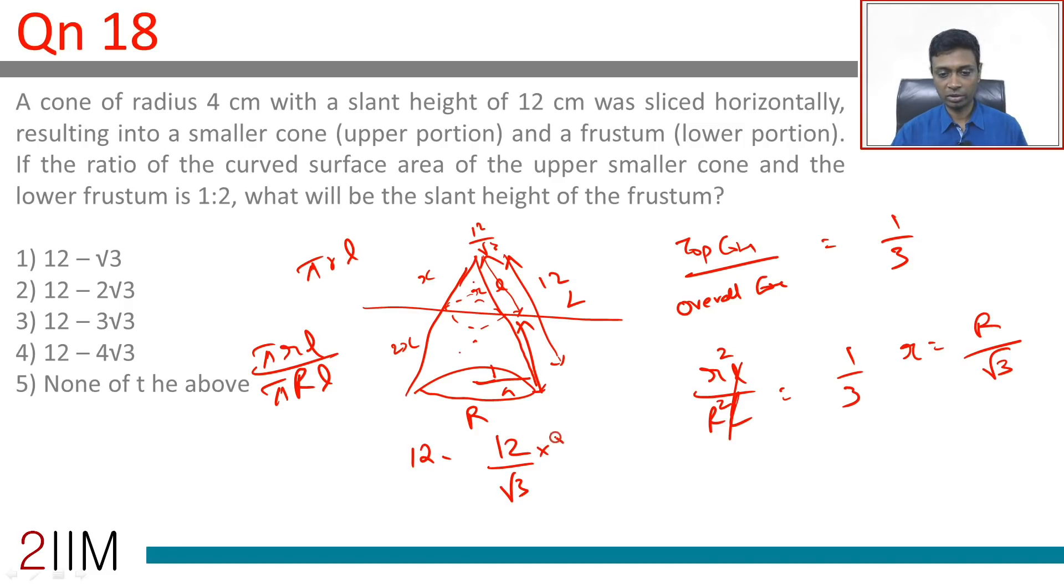12 minus 12 by √3, multiplying by √3 over √3. √3 times √3 is 3, so this is 12√3 minus 12, which is 12√3 - 12 over 3, equals 4(√3 - 1). Wait, 12 minus 4√3. We have a winner!